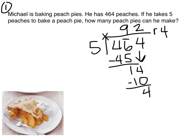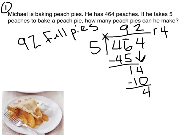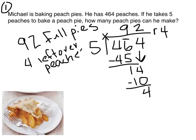What does the number ninety-two stand for in this problem? Ninety-two stands for ninety-two full pies. What does the number four stand for in this problem? It stands for four leftover peaches. So let's answer the question: how many peach pies can Michael make? He can make ninety-two pies. The four leftover peaches are not enough to make another pie.